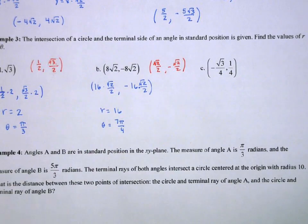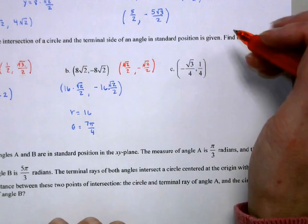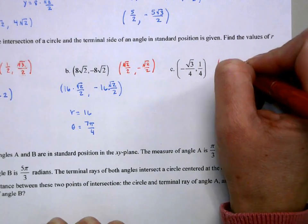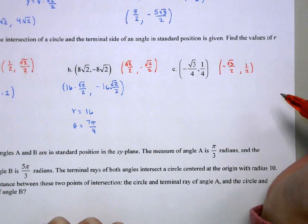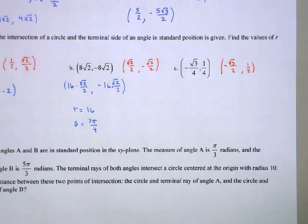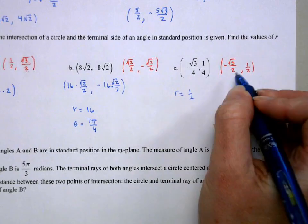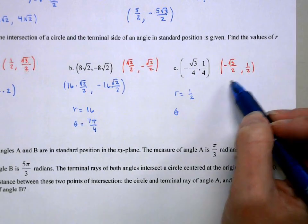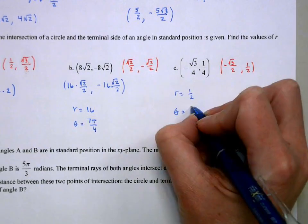For the last one: negative x and positive y means the second quadrant. The corresponding unit circle point is (−√3/2, 1/2). To get the given coordinates I multiply by 1/2, so r = 1/2. The negative-x, long-x short-y pattern means π/6 in that quadrant, which is 5π/6. So θ = 5π/6.